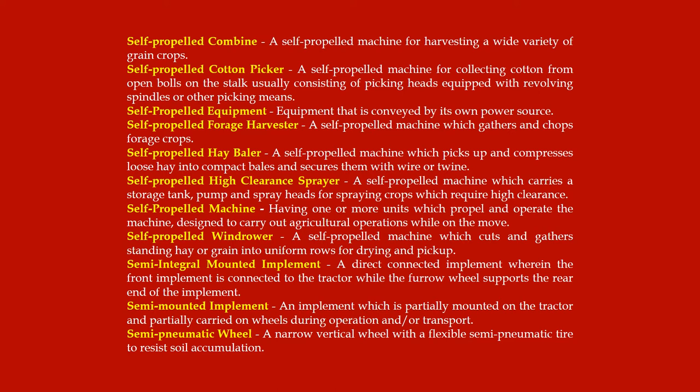Self-propelled cotton picker: a self-propelled machine for collecting cotton from open bolls on the stock, usually consisting of picking heads equipped with revolving spindles or other picking means. Self-propelled equipment: equipment that is conveyed by its own power source. Self-propelled forage harvester: a self-propelled machine which gathers and chops forage crops.